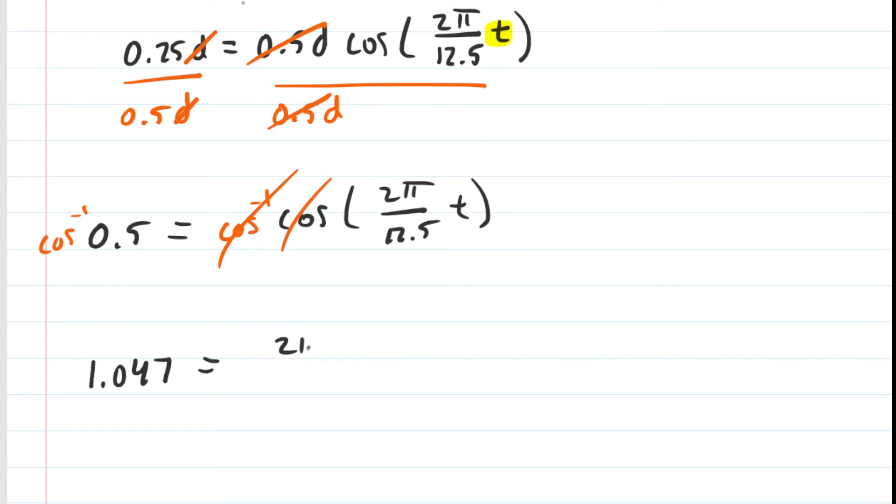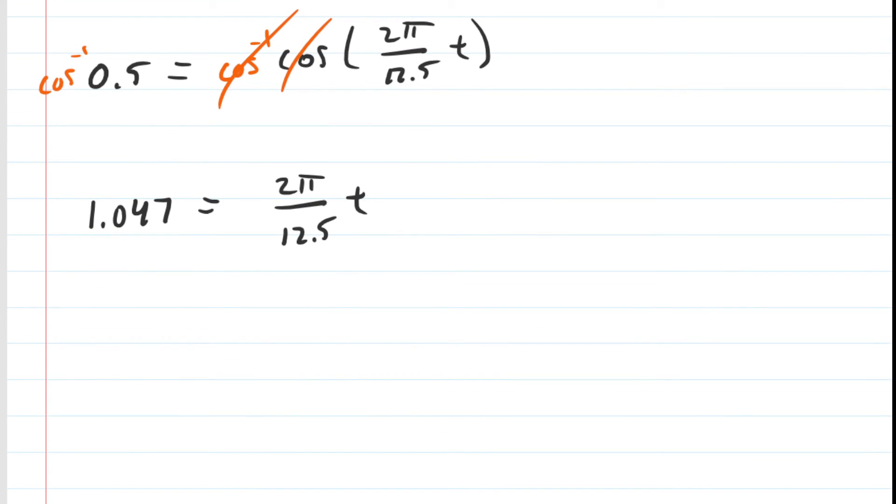And then this is equal to 2π divided by 12.5t. Now we're getting close to solving for t. We can multiply both sides of this equation by 12.5 over 2π. Make sure you do it on both sides. And that's going to be effective because that's going to cancel the 2π's on the right side and the 12.5's as well. So now we have solved for lowercase t. We could pick up our calculator and process the left-hand side. And when we do that, we get approximately 2.08. Since the period was measured in hours, this time comes out in hours. And indeed, this is the correct answer to the question.